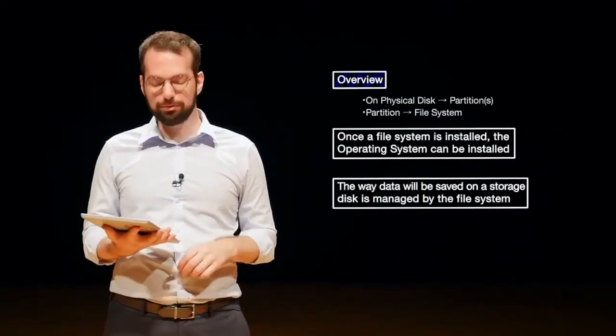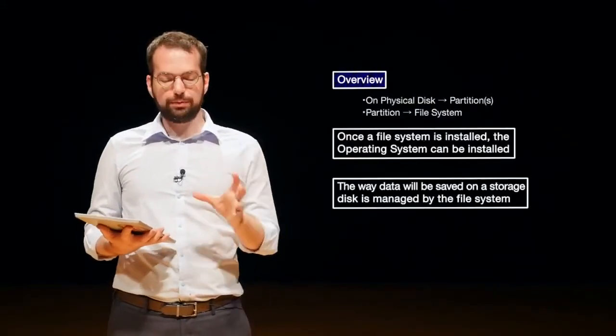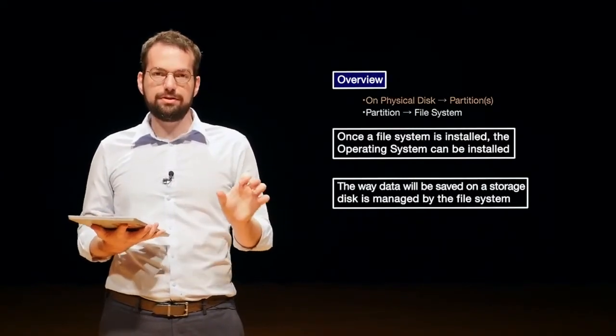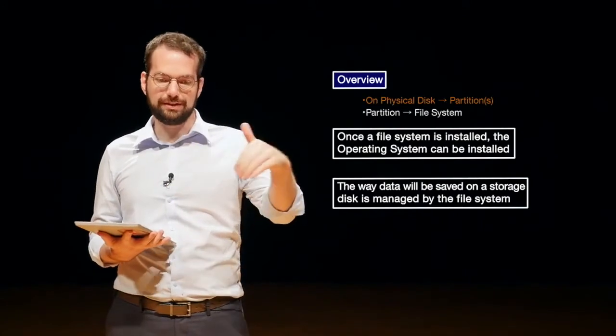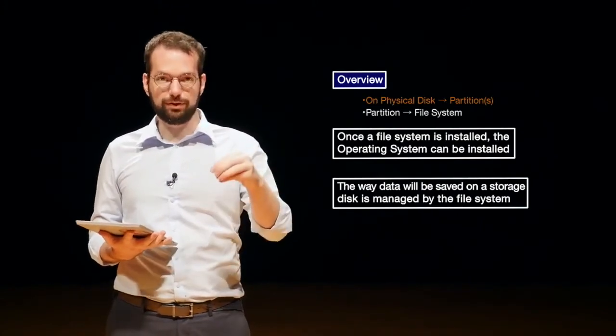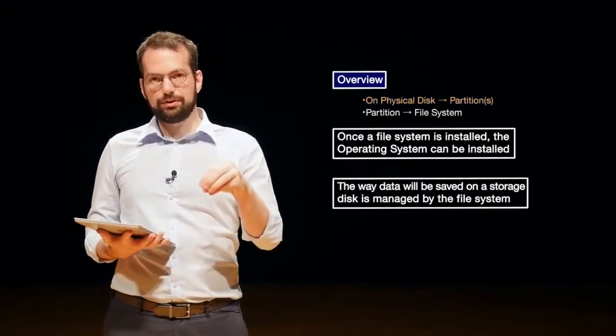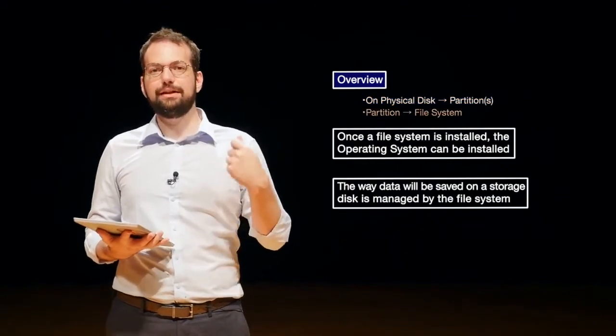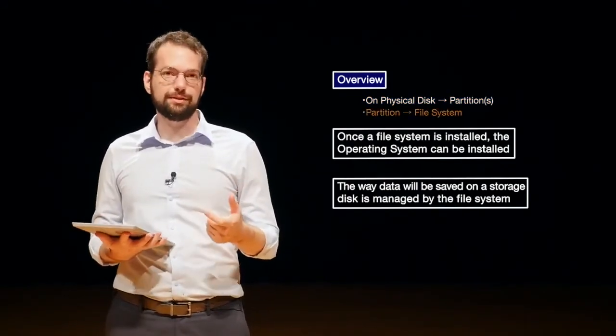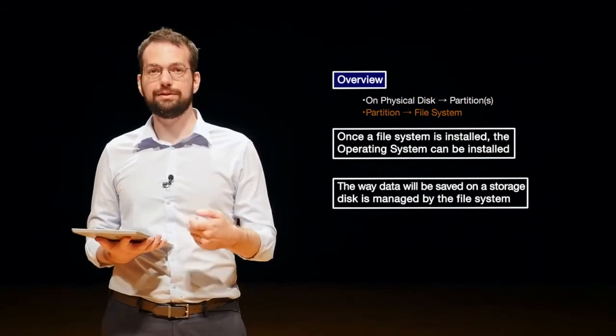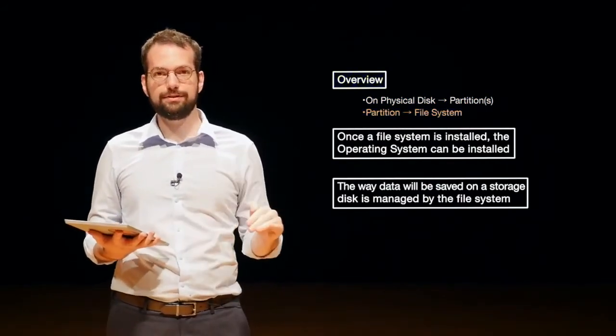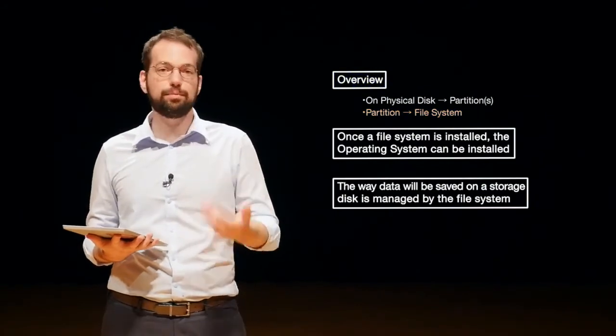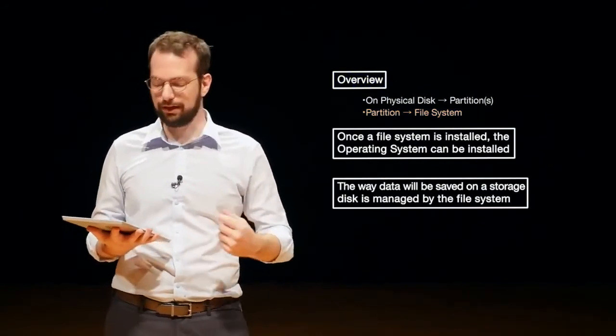Just a quick overview. First, we have a physical disk and on the physical disk, we need to create a logical partition, which is essentially just a container where we can store data. In this logical partition, we then install usually a file system. That way we can keep track of any of the files we want to save on that partition and recover them later. Once we have a file system, then we can install something like an operating system or just start saving data.